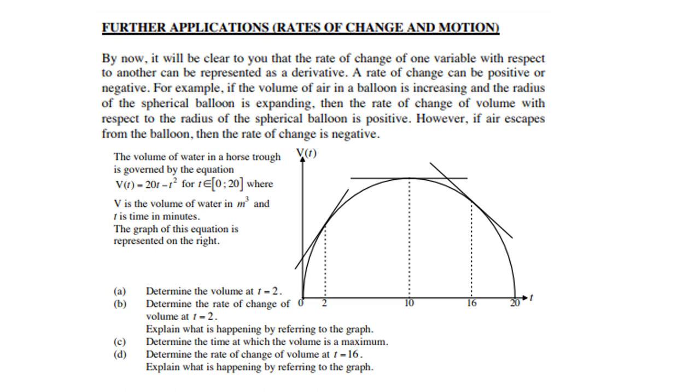The volume of water in a horse trough is governed by the equation V(t) is 20t minus t squared, for t an element of 0 to 20. So, the confines is 0 to 20, where V is the volume of the water in cubic meters, and t is the time in minutes. The graph of this equation is represented on your right-hand side.